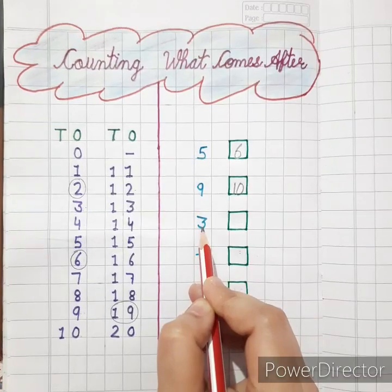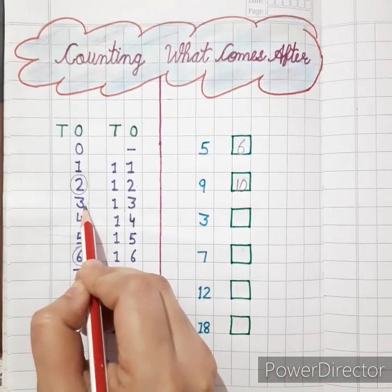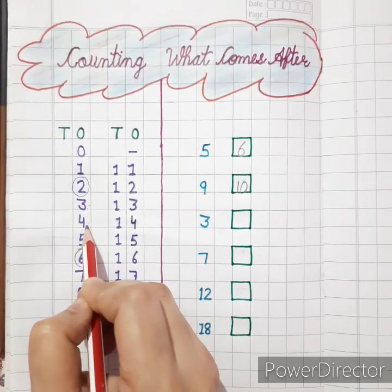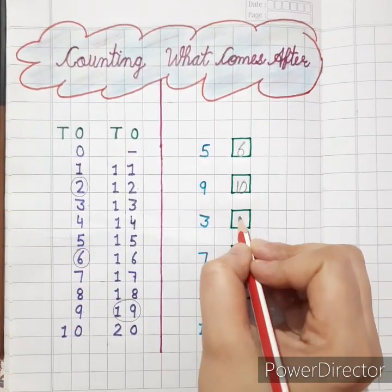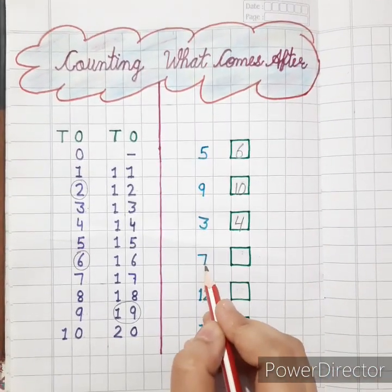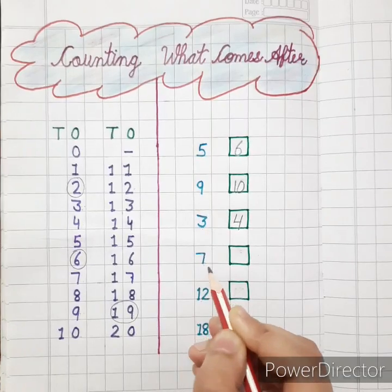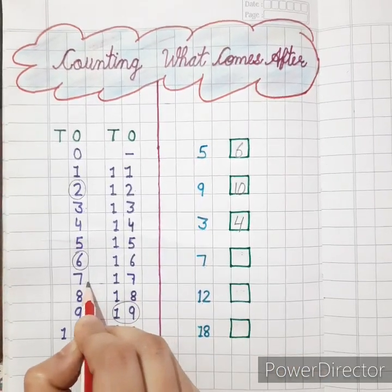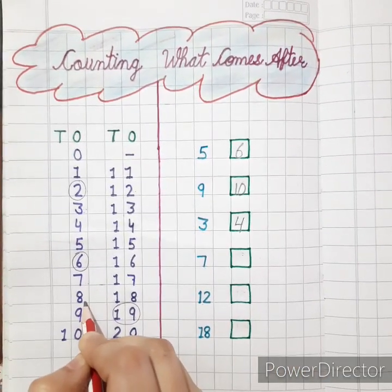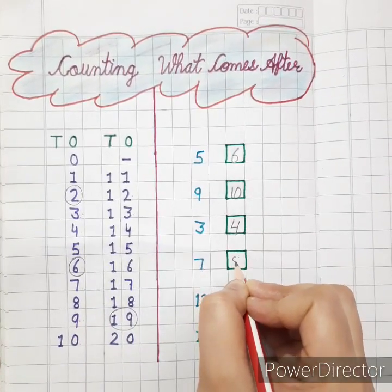This is 3. So kids, check the next number of 3. That is 4. So write here 4. This is 7. Kids, what comes after 7? That is 8. So write down 8.